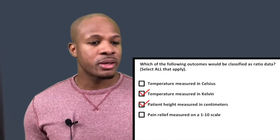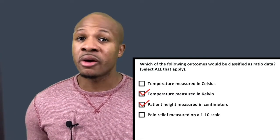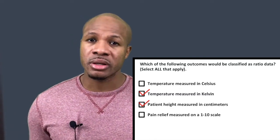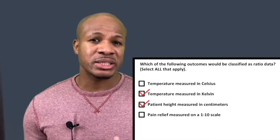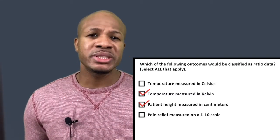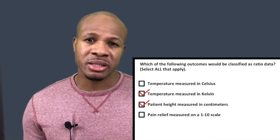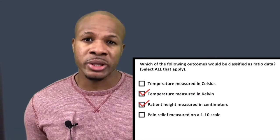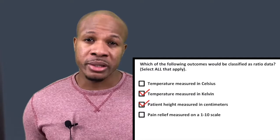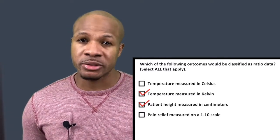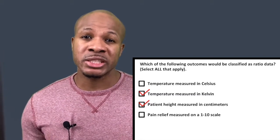Finally, we have pain relief measured on a 1 to 10 scale. Already, we can see that this is not continuous because it has a cutoff at 10. Also, pain scale data is subjective, which means it doesn't truly correspond to something we can objectively measure. So pain scale is not going to be ratio data — it's going to be ordinal data, and this is not going to be a correct answer. Our correct answers were temperature in Kelvin and measurement of height.